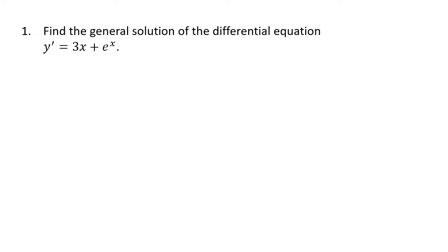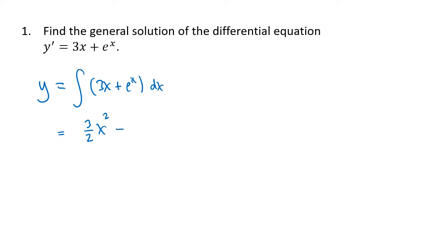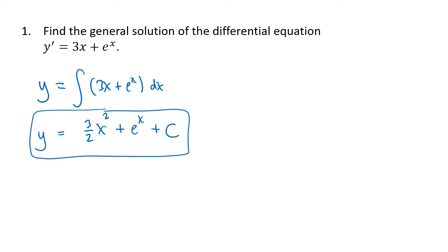Since we know what the derivative of y is, all we have to do to figure out the original function y itself is to take an antiderivative. So we're going to take the antiderivative of 3x plus e to the x. The antiderivative of 3x is 3 halves x squared, and the antiderivative of e to the x is e to the x, plus c because we took an antiderivative. That plus c, because it could be anything, is why we talk about this being the general solution — all those different values of c give us different functions that are all solutions to this differential equation.